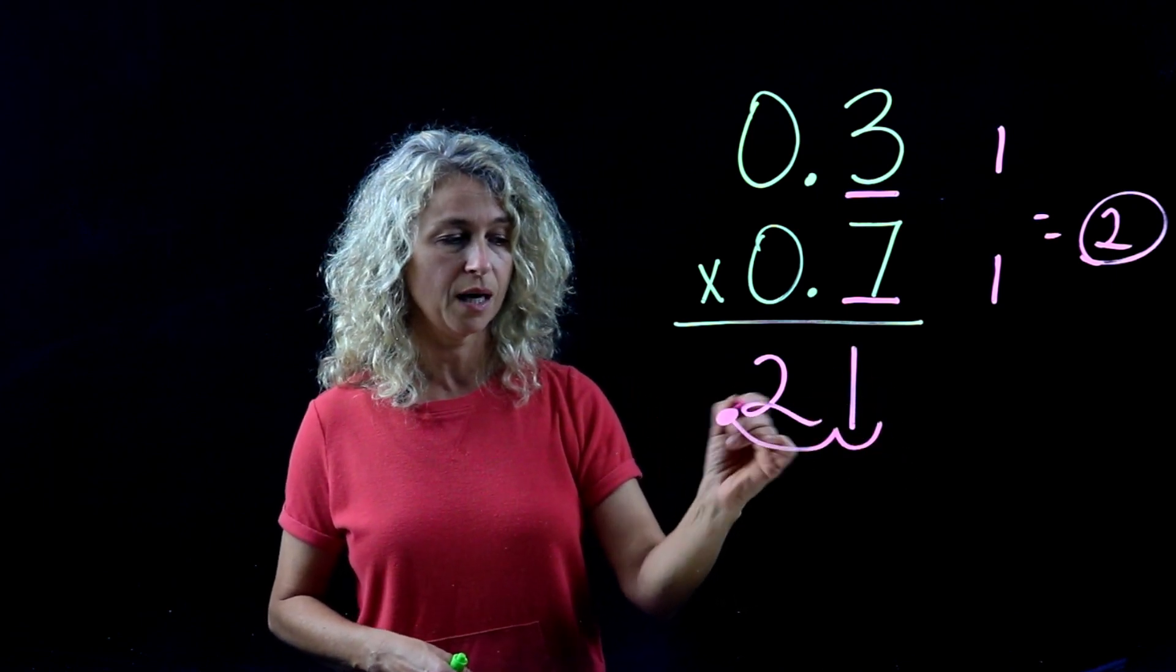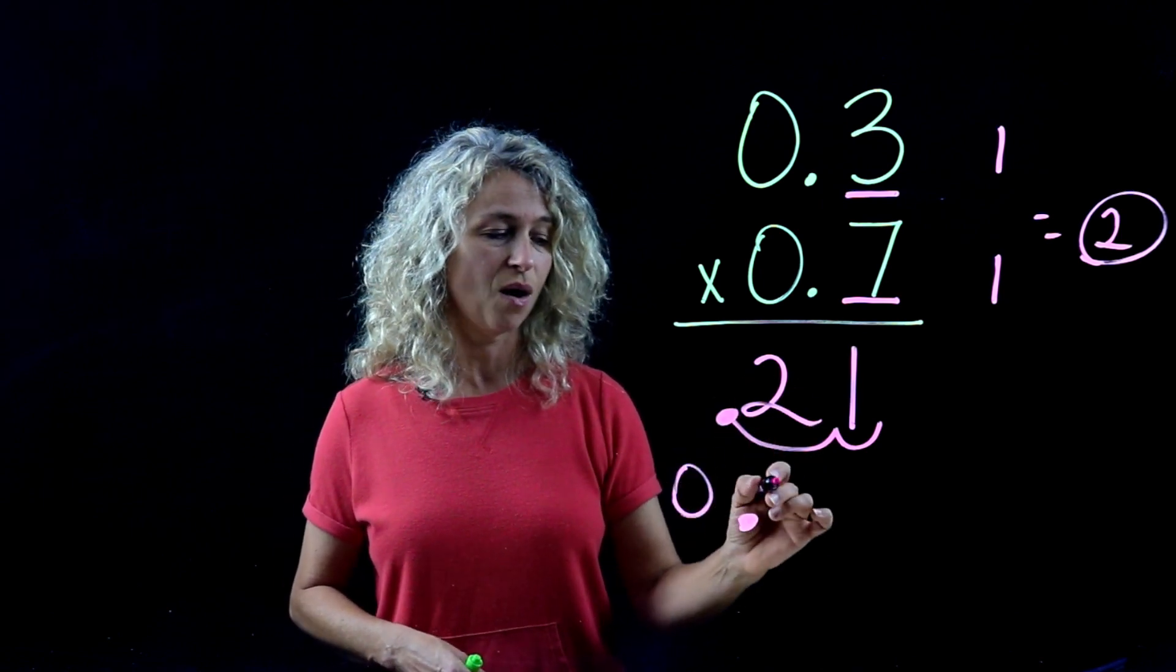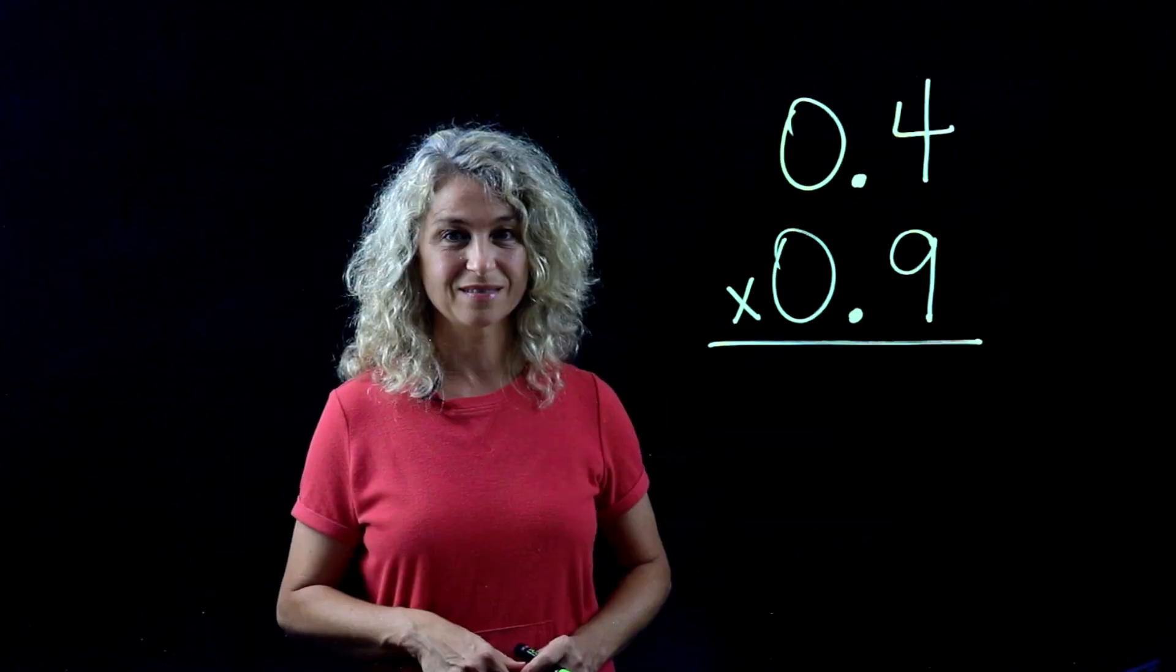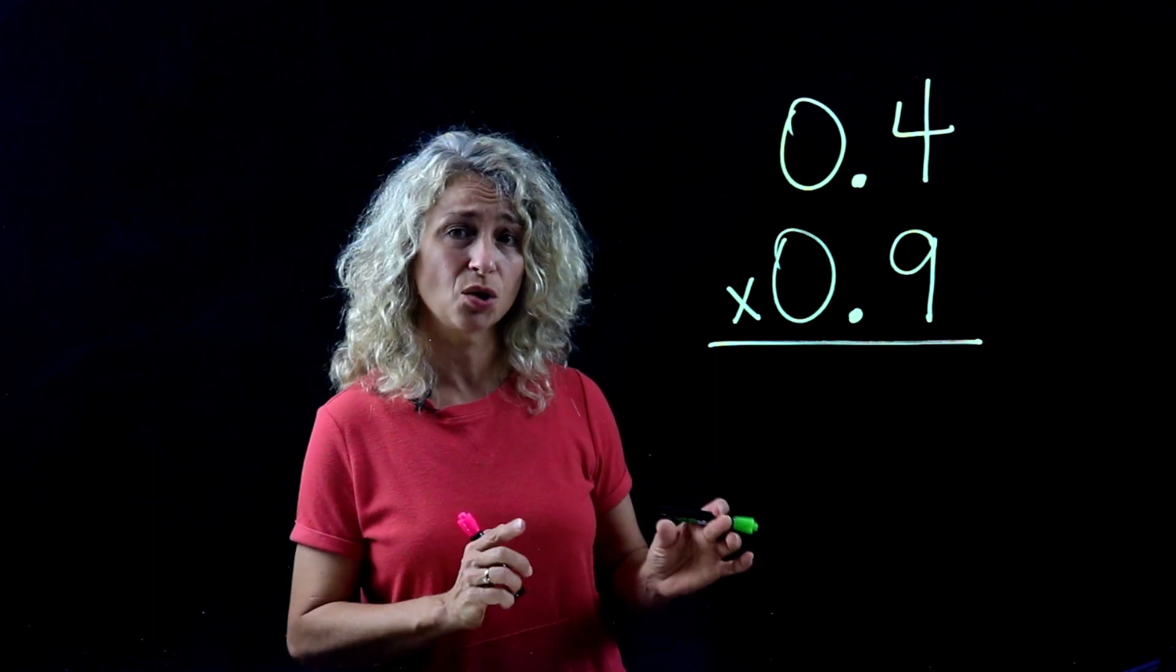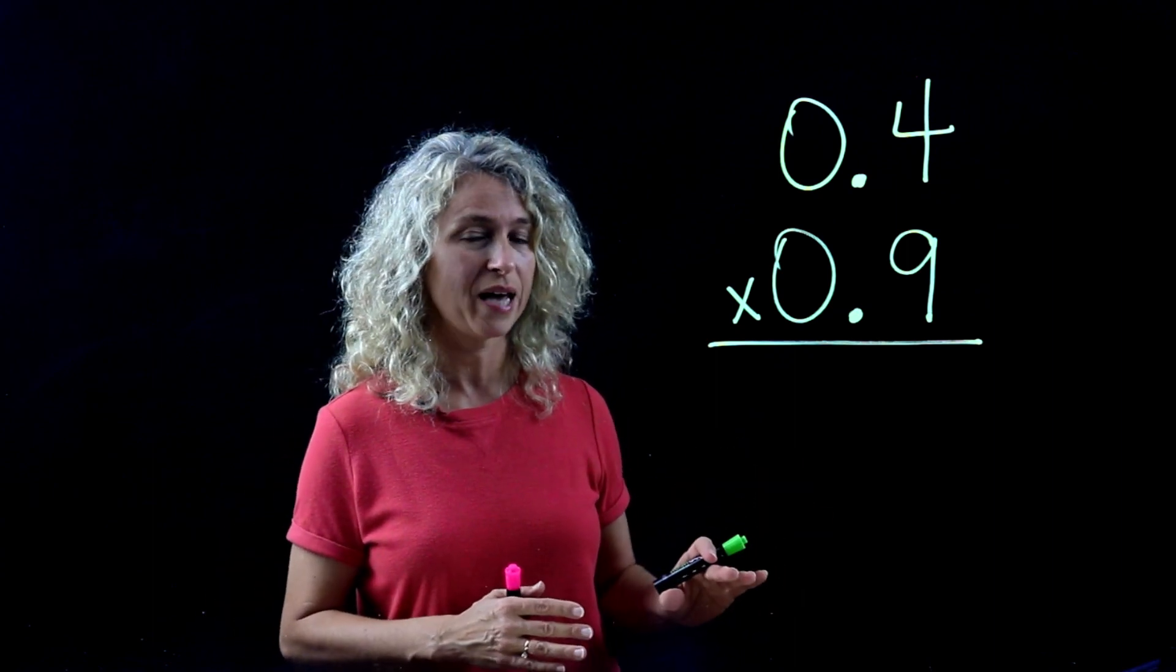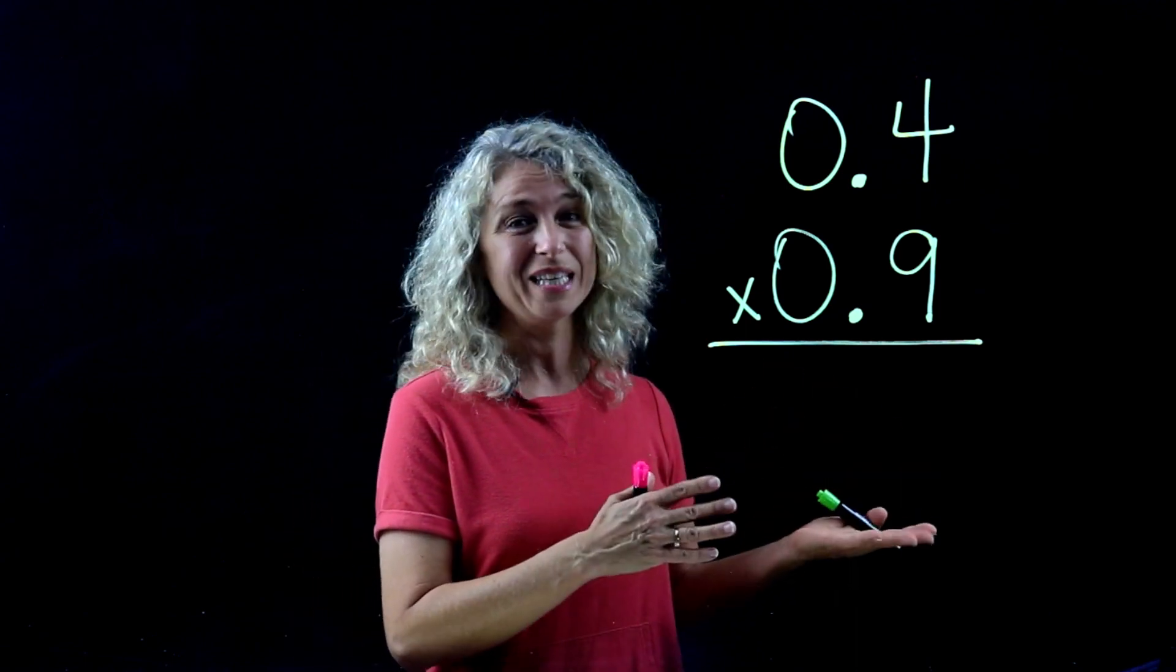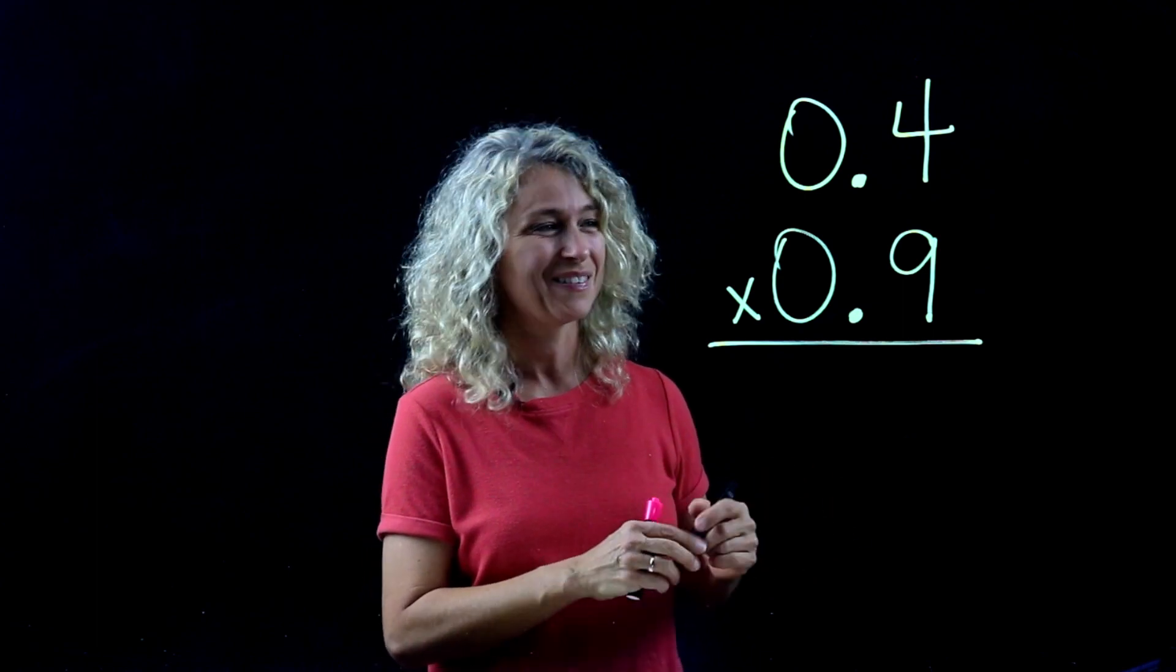So we'll come over 1, 2, and our final answer is 0.21 hundredths. All right, so in this problem I'm going to go a little deeper and show you why you don't have to multiply the zeros out. I'm going to actually multiply them out as an example of showing you why you don't have to do that.